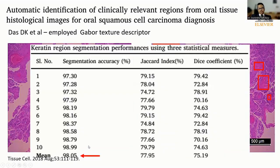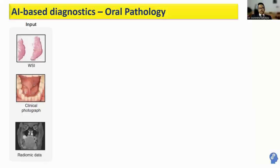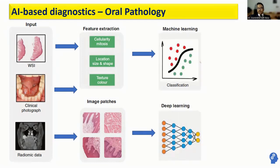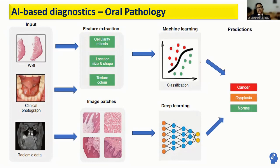How do AI-based diagnostics actually work? To develop such an algorithm, first we provide inputs such as whole slide images, clinical photographs, or radiographs. From these input data, features are extracted such as cellularity and mitosis, location, size and shape of pathology, or texture and color of the region of interest in a radiograph. After that, image patches are generated and used through machine learning and deep learning to train an algorithm. Following this, predictions can be made as to whether a given tissue, slide, clinical photograph, or radiograph shows cancer, dysplasia, or normal tissue.